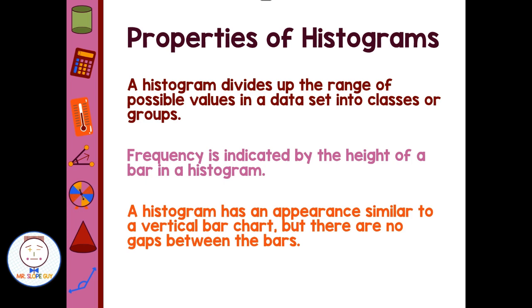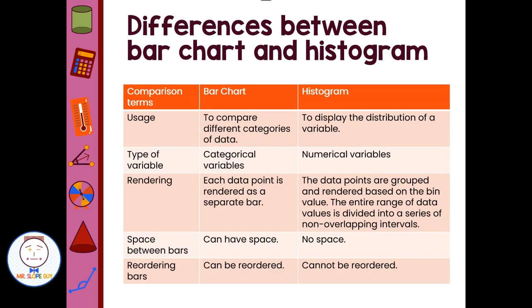So let's talk about the comparisons between a bar chart and a histogram. We have this nice table laid out to go through our differences and similarities. If we compare the usage, a bar chart is used to compare different categories of data, where a histogram is used to display the distribution of data. We're looking at the spread of our data, our distribution.